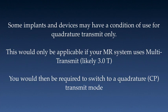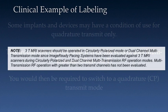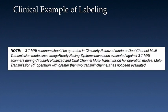With regard to safety, some implants and devices may have a condition of use that states quadrature transmit only. This would, of course, only be applicable if your MR system uses multi-transmit technology, and currently that is likely going to be 3T systems. If that were the case, then you would be required to switch to a quadrature or CP transmit mode. Here's an example of clinical labeling that specifies scanning in either the circularly polarized mode or a dual-channel multi-transmit mode — in other words, no more than two RF transmitters.